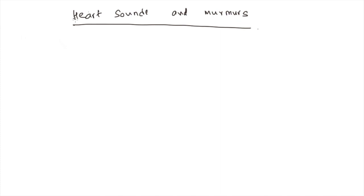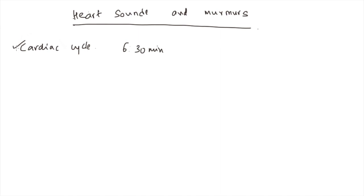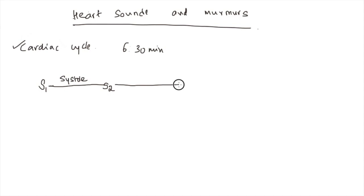In the previous video on arterial pulse, we learned about the cardiac cycle. If you're new here, go back and check out the first six and a half minutes of that video. We know that between S1 and S2 you have systole - ventricular systole - and from S2 to S1 of the next cycle you have diastole.